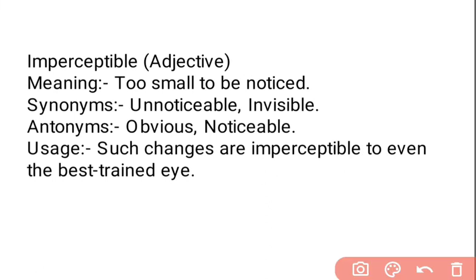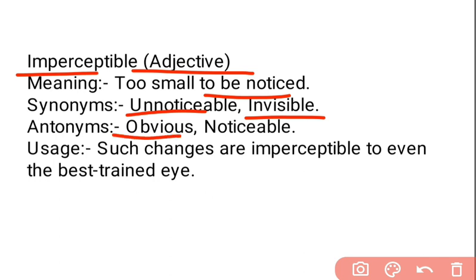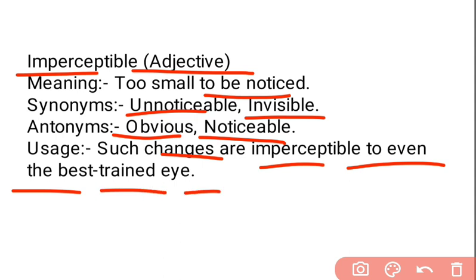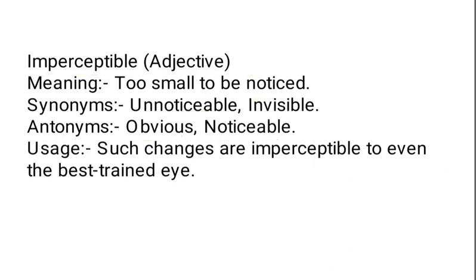Next word is 'imperceptible.' Imperceptible is an adjective. Iska matlab hota hai too small to be noticed — koi bhi aisi cheez jo bohot zyada small quantity mein hoti hai jo ki notice nahi ki ja sakti, na ke barabar. Synonyms: unnoticeable, invisible. Antonyms: obvious, noticeable. Example: 'Such changes are imperceptible to even the best trained eye' — kuch cheezein itni zyada minor hoti hain ki notice nahi ki ja sakti, kitna bhi trained person kiyo na ho, woh bhi usko notice nahi kar sakta.